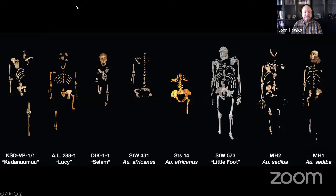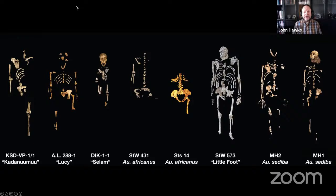We do have lots of fossils that represent much more of the body. This slide shows you some of the skeletons that we have of species that are two million, two and a half million years old of human relatives. That includes species like Australopithecus afarensis on the left of the screen, and Australopithecus sediba on the right of the screen — species that lived two to three million years ago. What I want to emphasize is that all of them lived in Africa more than two million years ago. Our species, Homo sapiens, has an African origin. All of our fossil ancestors and relatives before two million years ago were African fossils. And our closest living relatives, chimpanzees and gorillas, are modern great apes — they live in Africa today.